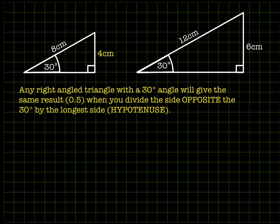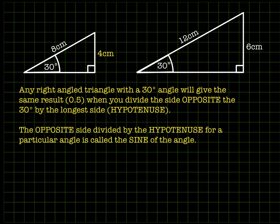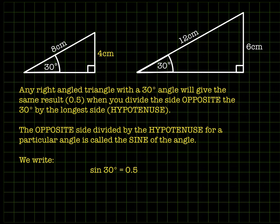Any right-angled triangle with a 30 degree angle will give you the same result — 0.5 — when you divide the opposite side (the side opposite the 30 degrees) by the longest side. The longest side is called the hypotenuse, and the opposite side divided by the hypotenuse for a particular angle is called the sine of the angle. We write it as sin. Sin of 30 equals 0.5, which means that in any 30 degree right-angled triangle, the side opposite the 30 divided by the hypotenuse equals 0.5.